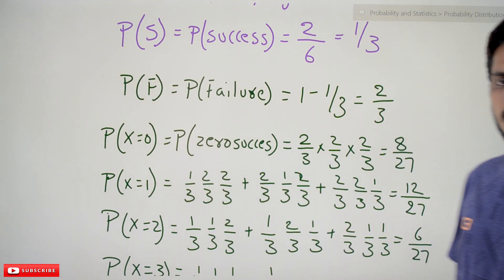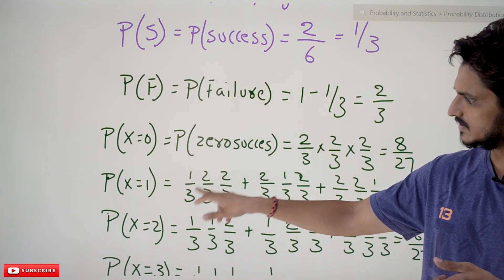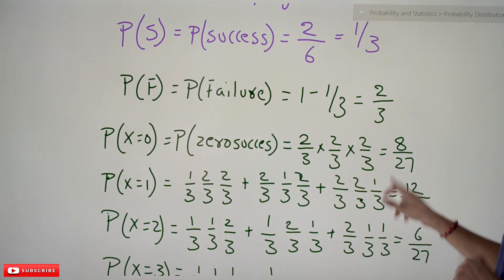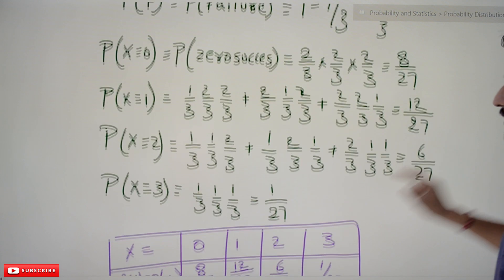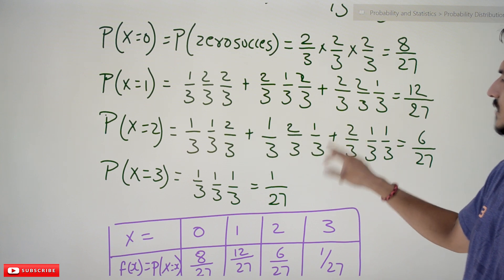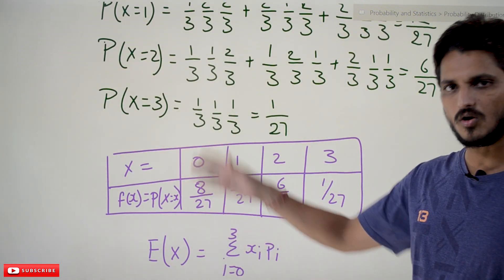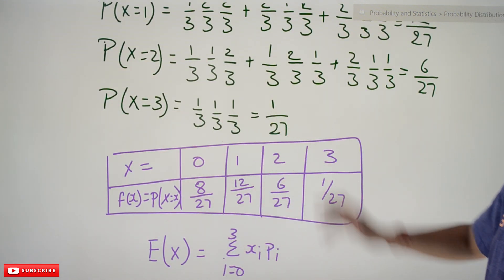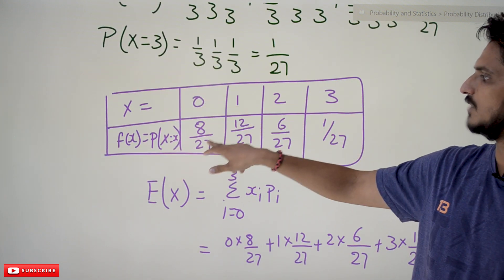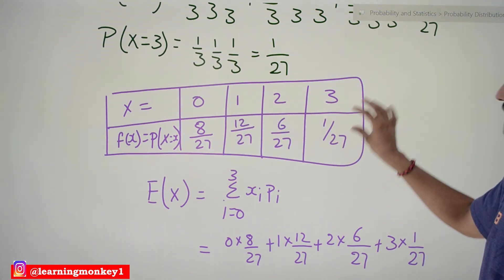Probability of X equal to one: one success can occur as success-failure-failure, or failure-success-failure, or failure-failure-success, giving twelve by twenty-seven. Similarly, probability of X equal to two is six by twenty-seven, and probability of X equal to three (all successes) is one by three times one by three times one by three, equal to one by twenty-seven. The distribution table looks like: X = 0: 8/27, X = 1: 12/27, X = 2: 6/27, X = 3: 1/27.